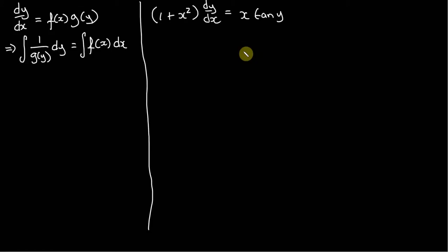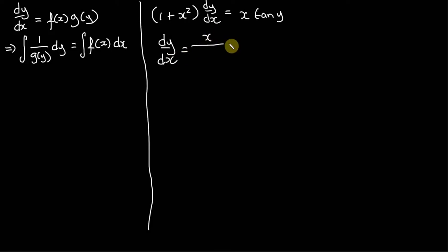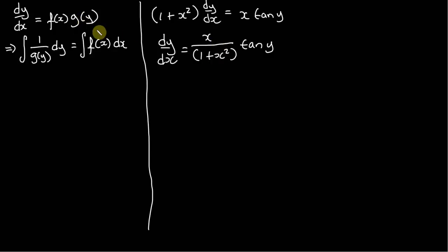Now, once first given this, how do we even start to move forward? The first thing we want to think about is getting this into the form dy/dx = f(x)g(y). What comes to mind is we can divide right across this entire equation by (1 + x²). So what we get on the left-hand side is just dy/dx, and that equals x over (1 + x²), and then of course we've still got our tan(y). Notice that just by that simple move, we've got dy/dx equal to some function of x — that's x/(1+x²) — and some function of y — that's tan(y).